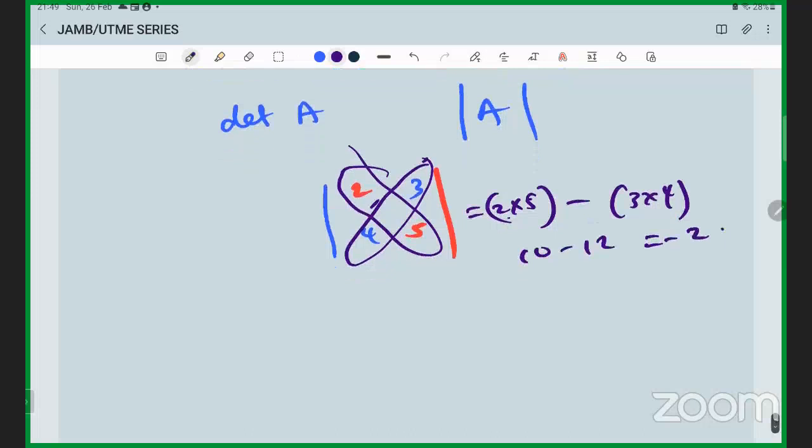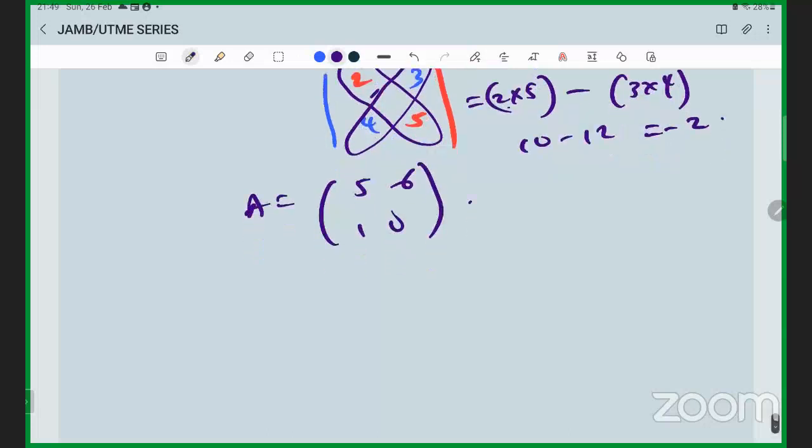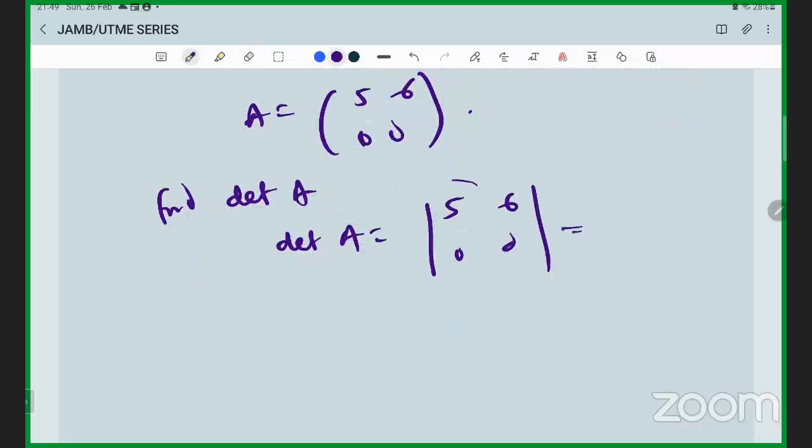So if A is equal to the matrix five, six, zero, zero. We find that A - you might have five, six, zero, zero. Can you imagine? Product of elements on the first diagonal: five times zero is zero, minus product of elements on the second diagonal: you might get zero.